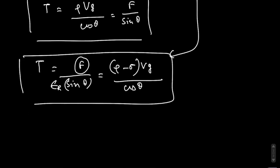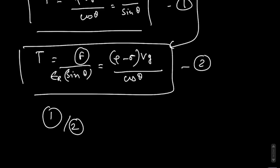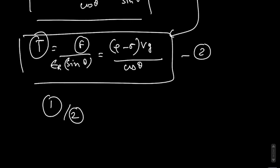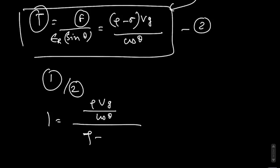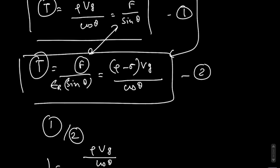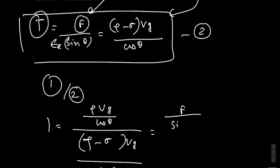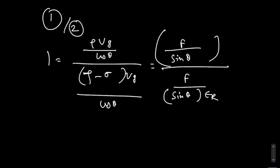So let's take a look at this equation. If you divide equation 1 by equation 2, F by sin θ equals to F by sin θ divided by εr.